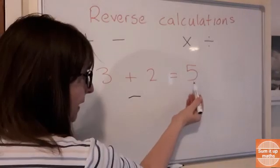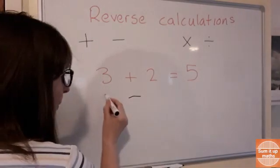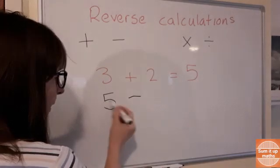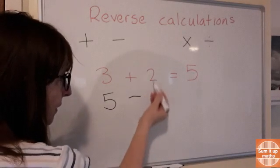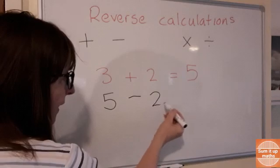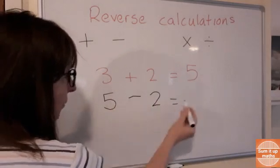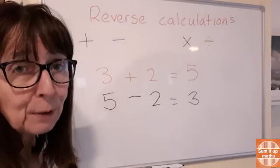Instead of ending with 5, we're going to start with 5. So 5 takeaway, now this one just stays the same, takeaway 2 equals and we can see that that's 3. So the calculation has worked both ways, so we know it's correct.